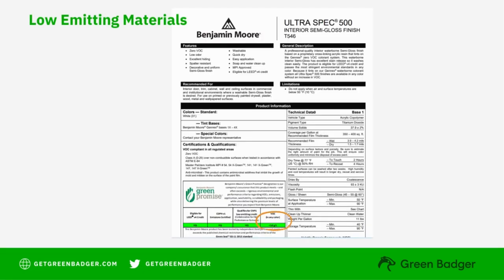Here's an example of a Benjamin Moore product data sheet showing the VOC content. MSDS sheets typically will show VOC content in Section 9, but whichever document you use, you're looking for the VOC in grams per liter, and this is the number you'll record on the cover sheet.